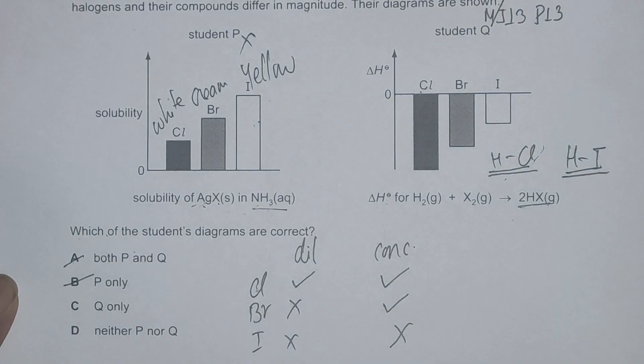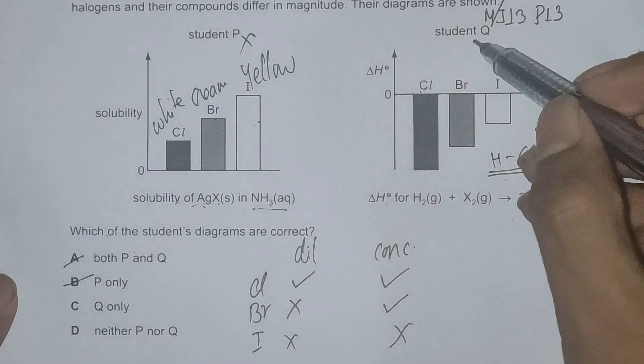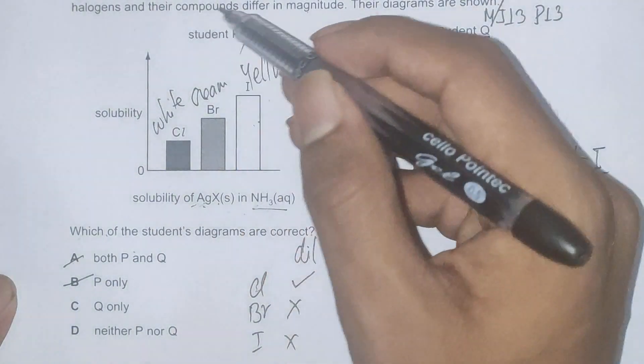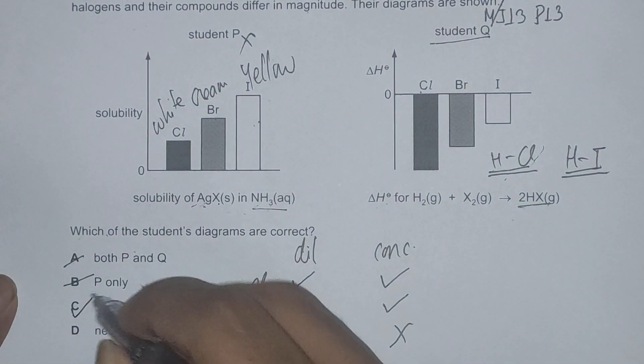And the graph student Q has drawn corroborates with this fact. So student Q is correct and P is incorrect, which makes C the correct answer. That means a lot for those.